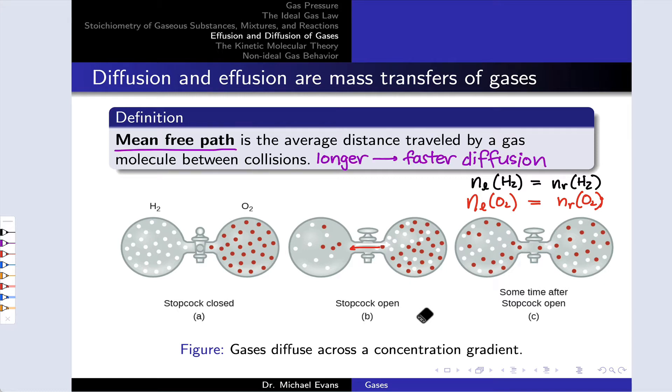This is what's known as the mean-free path. And essentially, the longer this is, the faster diffusion is, since the gas molecules can cover more distance before they collide with something, be it another molecule or the container wall.